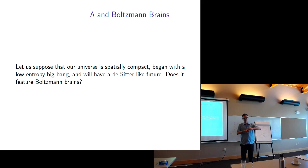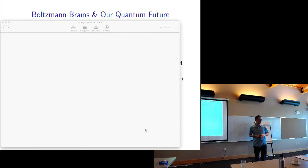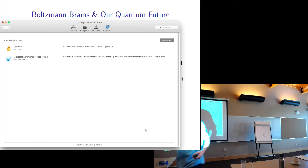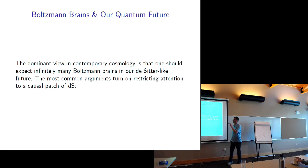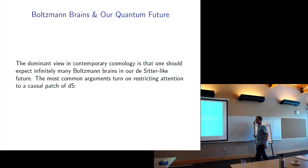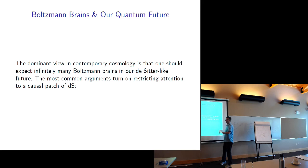What if it's de Sitter plus quantum? The dominant view among cosmologists — at least west-coast cosmologists — is that you should expect infinitely many Boltzmann brains in a de Sitter-like future. Because of the no-hair theorems, we expect a de Sitter-like future. The quick argument about classical systems suggests few if any Boltzmann brains, but cosmologists expect infinitely many in our de Sitter-like future.